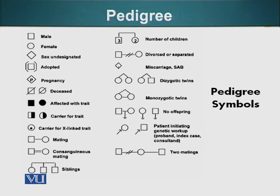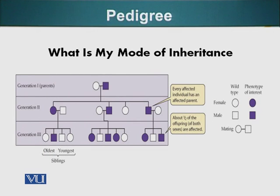Here is an example of a pedigree. For example, this person came in with a particular disease and wanted to investigate it. You want to determine the mode of inheritance of this disease — and say this person wants to marry someone and wants to know the probability of having affected children. You don't know whether the disease is recessive or dominant, so you start by making his family tree. Here's an example.